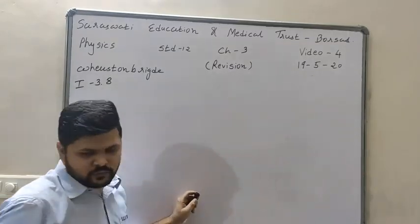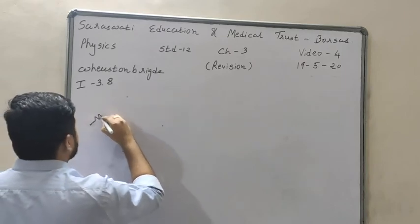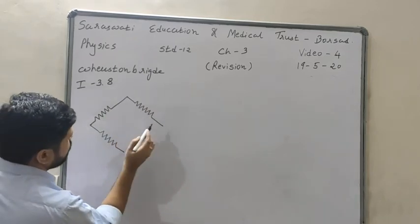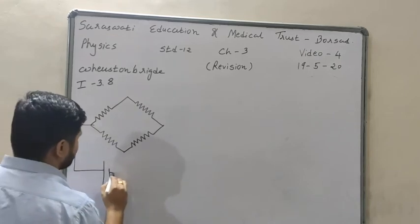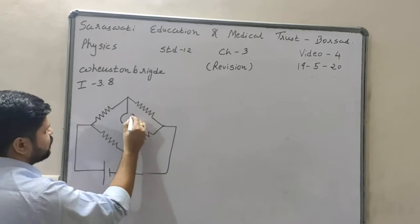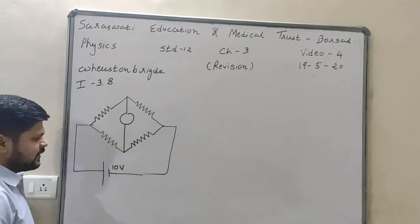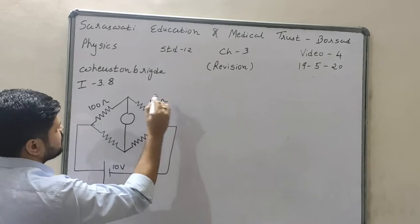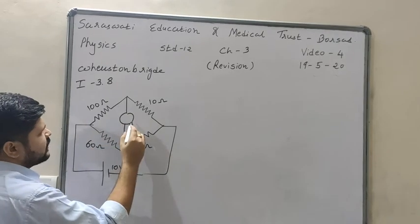In illustration number 3.8, we are given 4 resistances. The battery is of 10 volts. The 4 resistances are: 100 ohm, 10 ohm, 5 ohm, and 60 ohm. There is also a galvanometer, and this galvanometer has a resistance of 50 ohm.